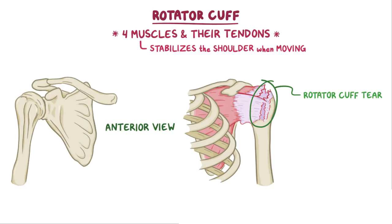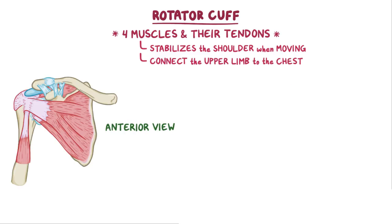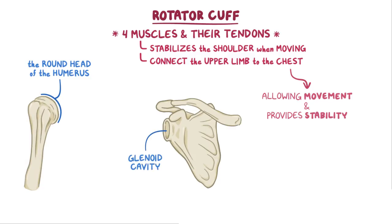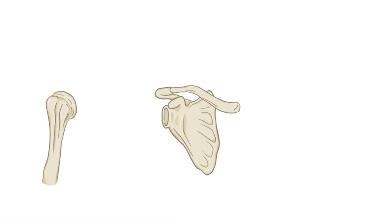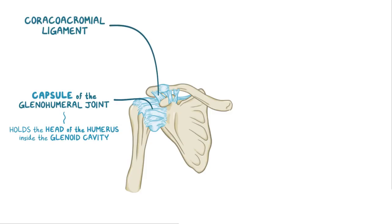The shoulder is a complex of bones, ligaments, muscles, and their tendons that all work together to connect the upper limb to the chest, allowing necessary movement and providing stability. The round head of the humerus fits and rotates inside the shallow glenoid cavity of the scapula. Just above the glenoid cavity, the scapula extends two bony processes — the acromion and the coracoid processes — which serve as attachment for ligaments and muscle tendons. The ligaments of the capsule of the glenohumeral joint hold the head of the humerus inside the glenoid cavity. The coracoacromial ligament forms an arch between the coracoid process and the acromion, and it prevents the head of the humerus from upward dislocation.